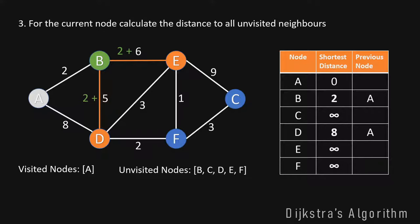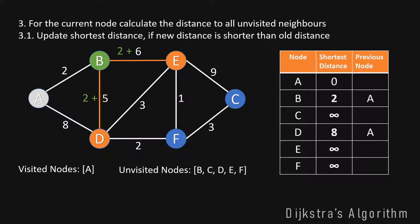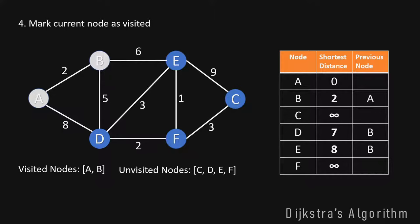Node E will have a current distance of 8 from A over B. We check if 8 is less than the current shortest distance in our table, which is infinity — and it is, so we update the shortest distance to E and set B as the previous node. For node D, the distance is 7 (2 plus 5) from A over B. Since 7 is less than the current value of 8, we update D's shortest distance to 7 and set the previous node to B. We are now finished with B and mark it as visited.